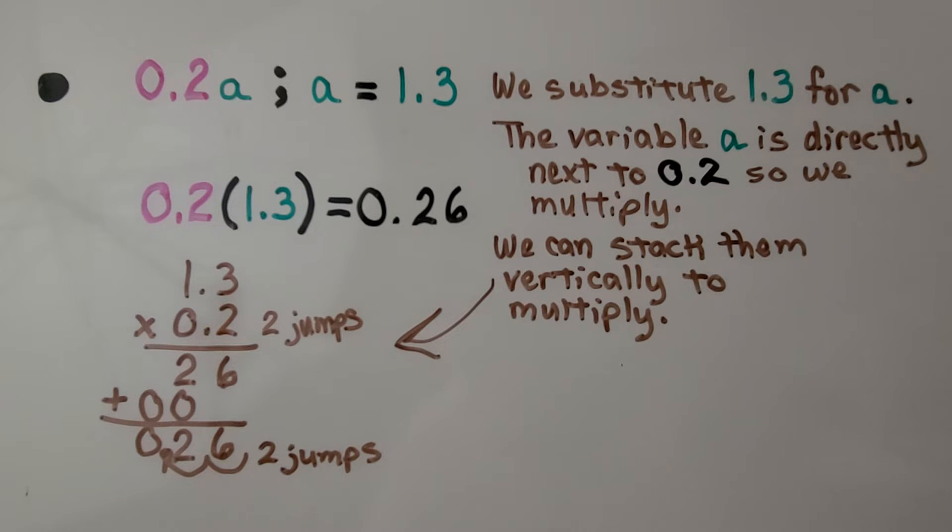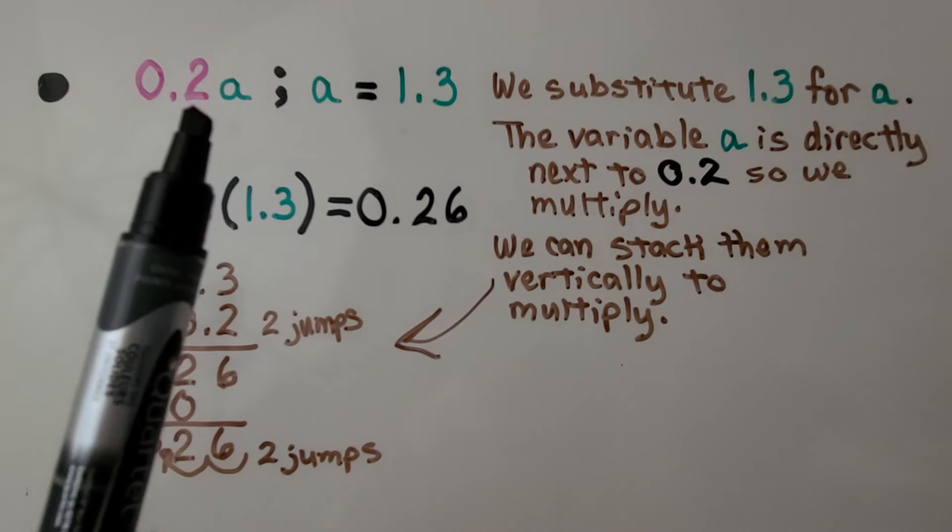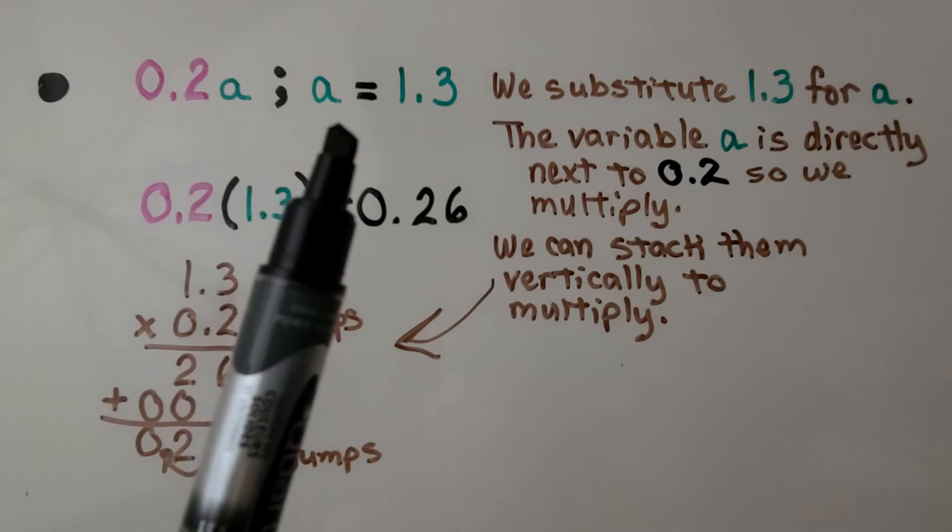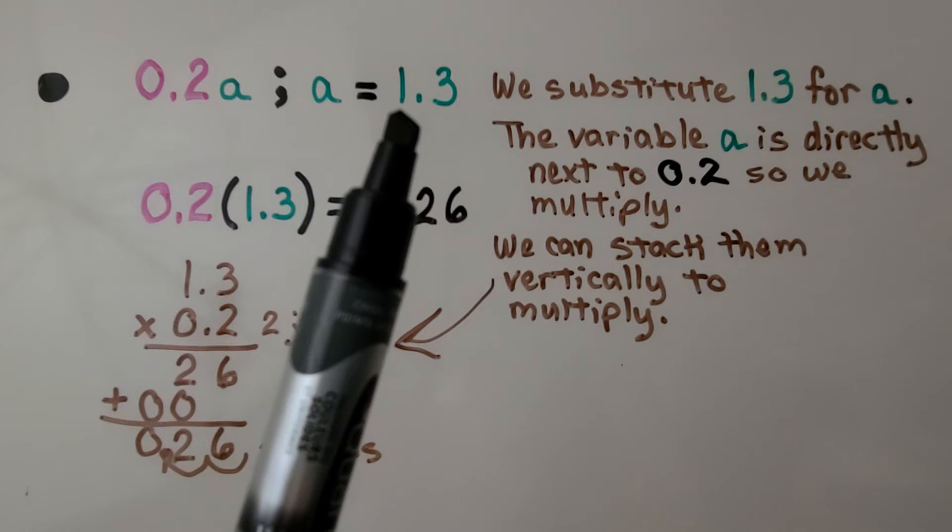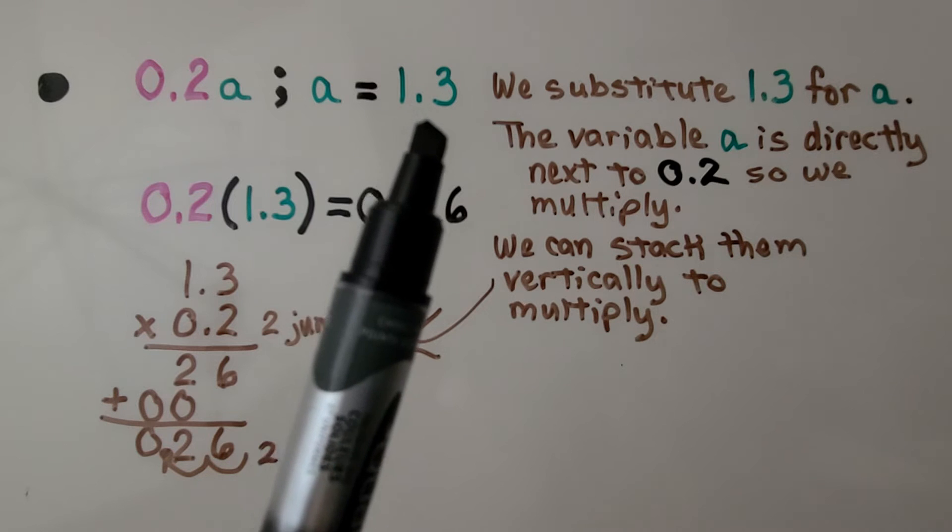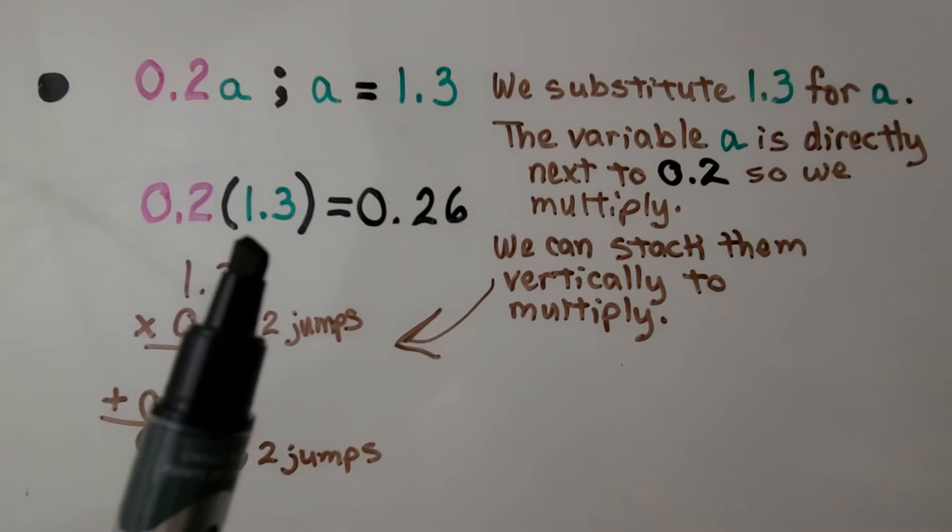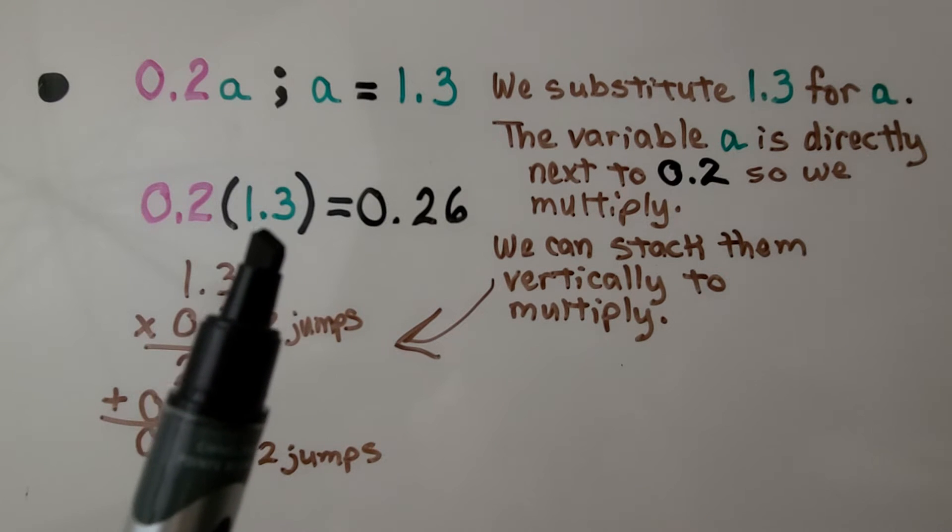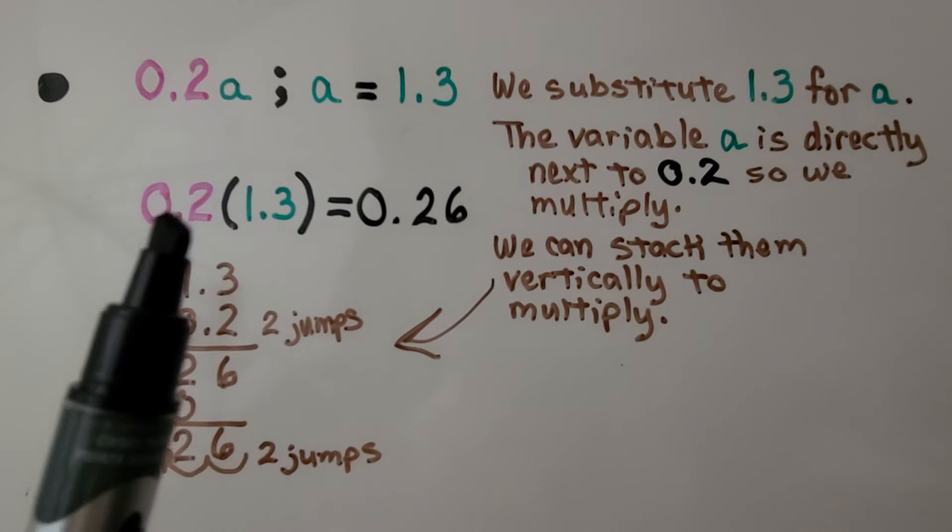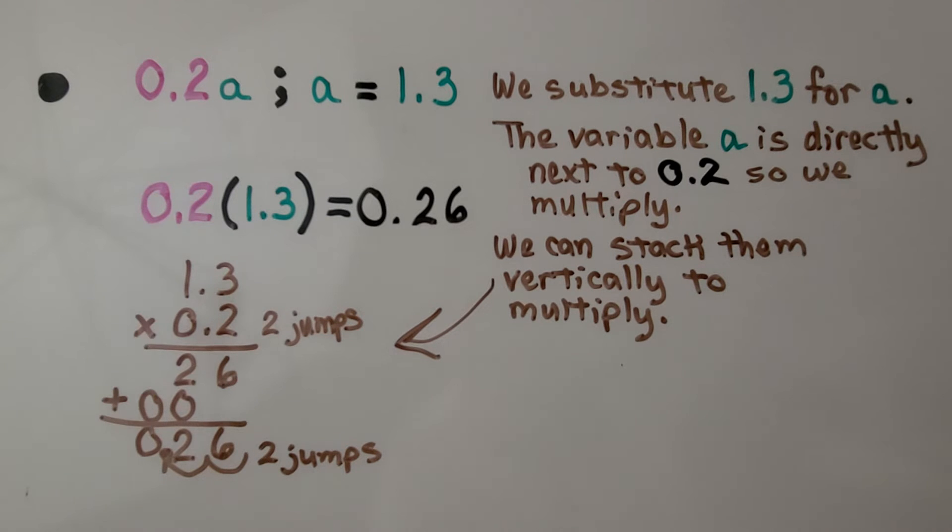Here we have a decimal. We have 2 tenths a. a is our variable. And it's telling us that a is equal to 1 and 3 tenths. So we substitute 1 and 3 tenths for the variable a. It's directly next to the 2 tenths, so we multiply.